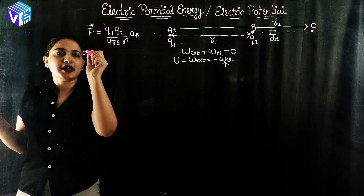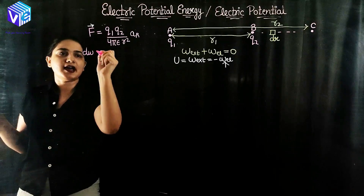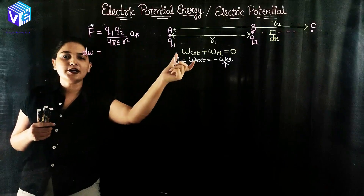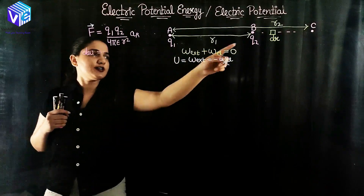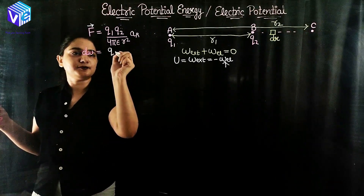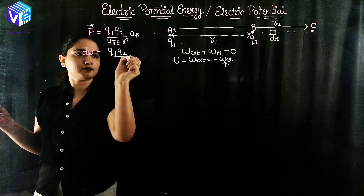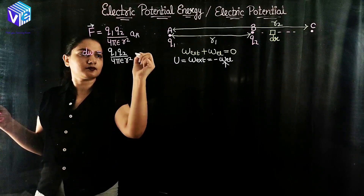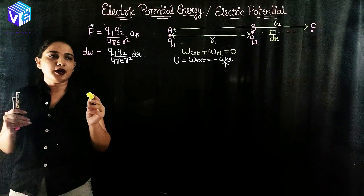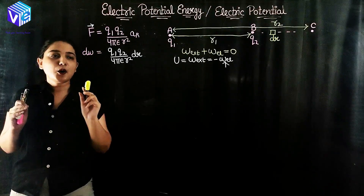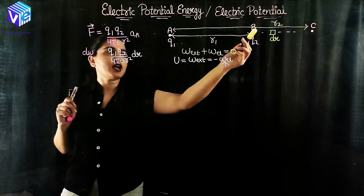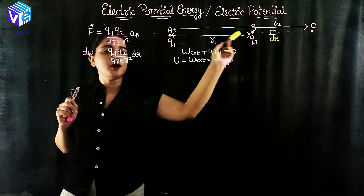If I need to find out the small work done, it will be given by dW. dW will be equal to the force into small displacement dr, which gives Q1·Q2 upon 4πε·r². This is the small work done.